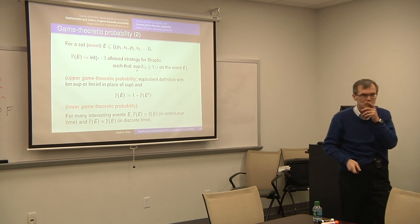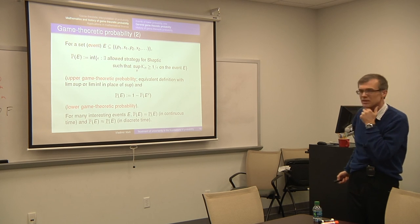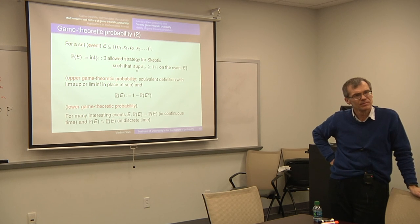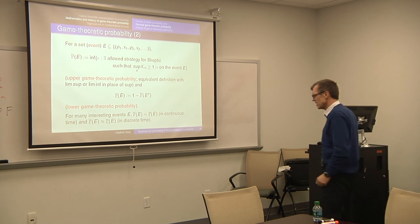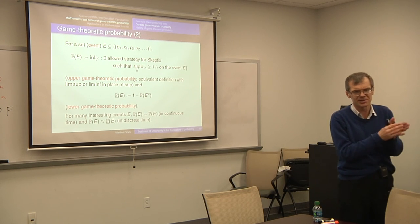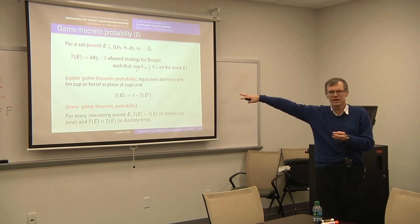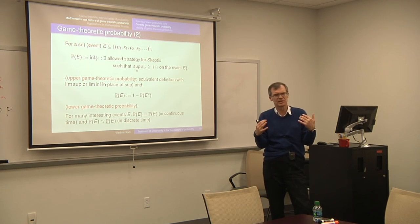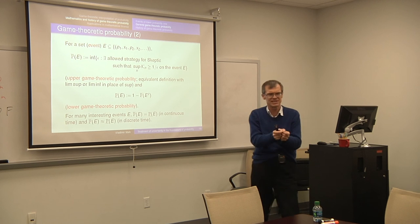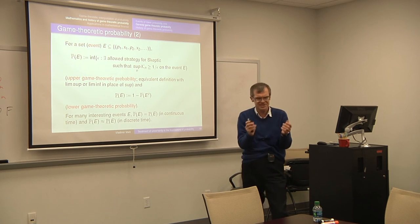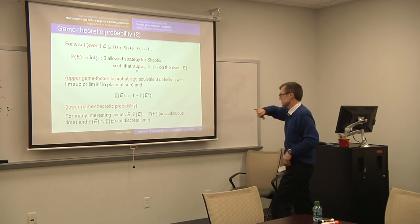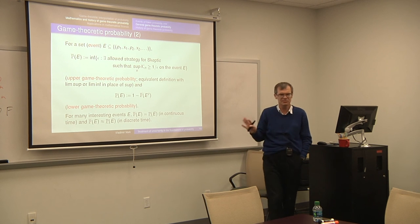The strategy in the game theoretic proof is explicit, constructive, and computable. In measure theoretic probability, it's not about strategies. But here it's always explicit — you can write it down and say what skeptic should do. When we assume skeptic's strategy is measurable, we can show that a game theoretic result implies the corresponding measure theoretic result. In abstract theory we don't impose measurability — we just say a strategy exists. But in practice, for all results we know, the strategy is computable.